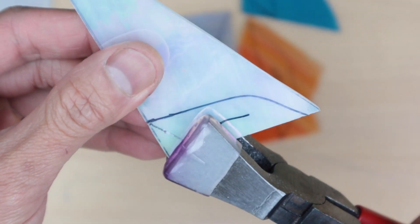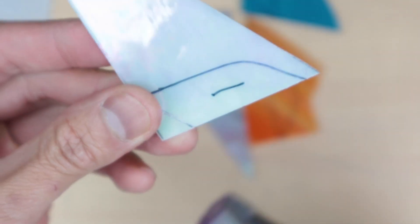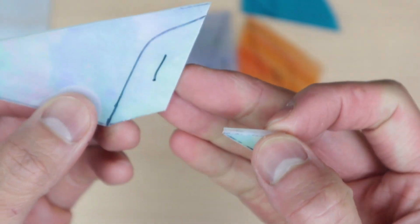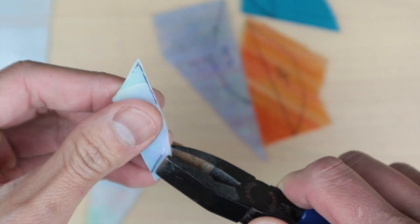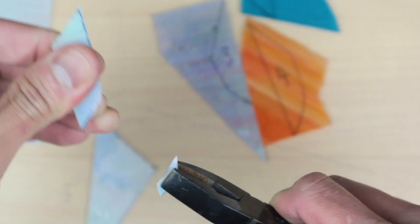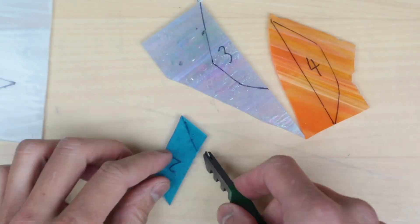Next we'll use the running pliers to line up the etched line on the pliers to the score line on the glass and squeeze the pliers together to break the glass at that point. If it wasn't a clean break you can also use the grosing pliers to help pull and break away the glass at that point. We'll repeat this with the rest of the glass pieces.